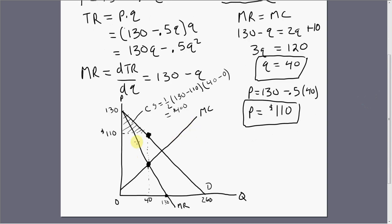Producer surplus is going to be this big area here, the difference between the price the monopolist is selling the good for and the marginal cost curve, up to the quantity sold. In order to calculate this area, we're going to have to divide it into two sections. One area is a triangle and the other area is a rectangle.